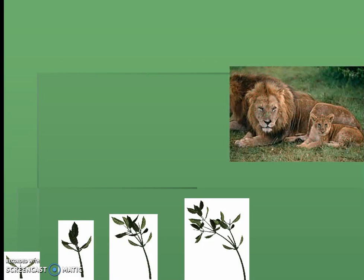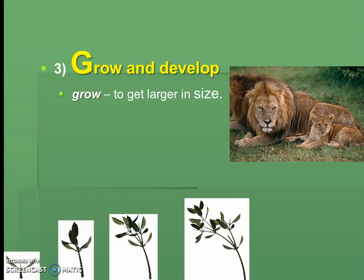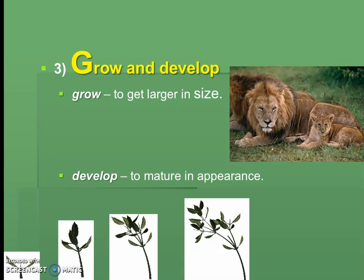The next letter in HOGRACE is G, which stands for Growing and Developing. These two words mean different things. Grow means to get bigger or larger in size. Develop means to mature in appearance — for example, a lion getting a mane, or humans going through puberty. For plants, they get bigger and eventually fruit. We'll talk more about this in class, and we're even going to be growing some plants.